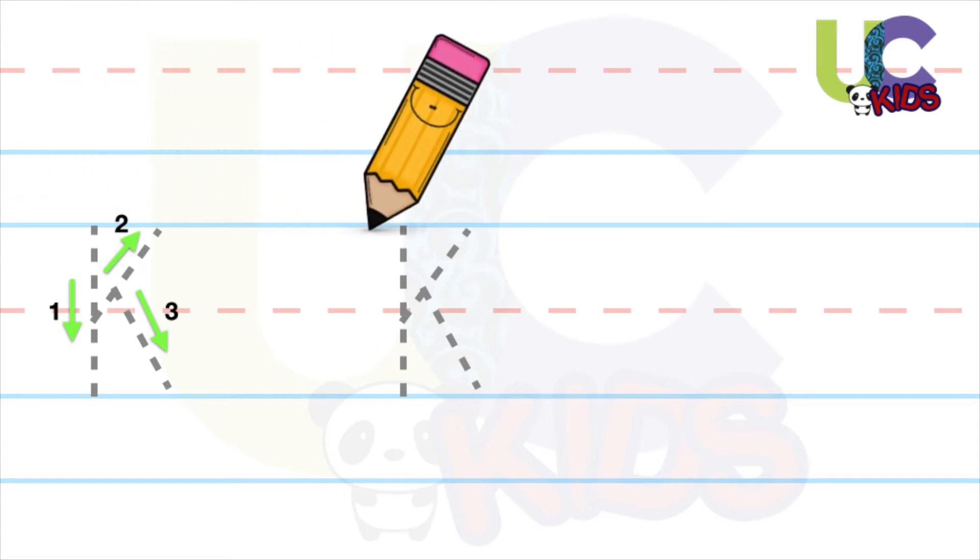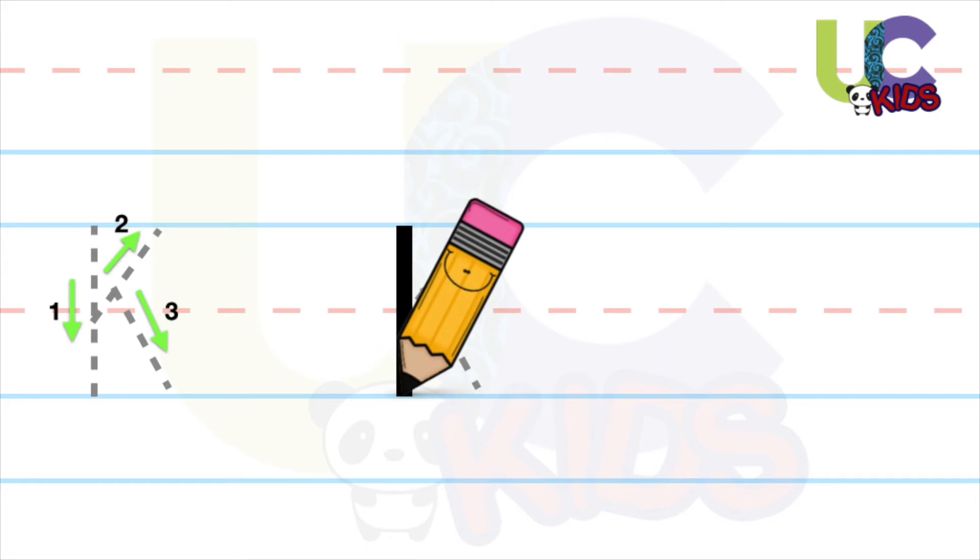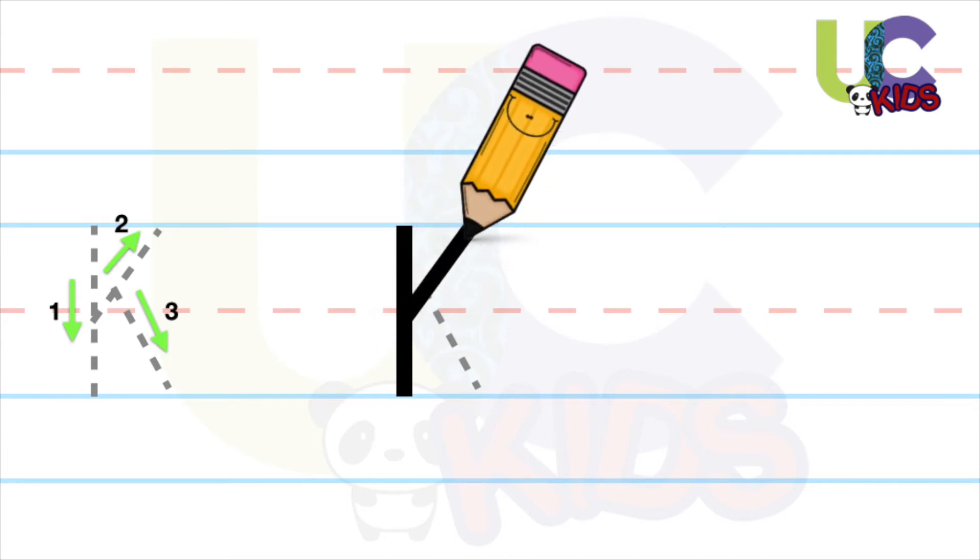Now get your pencil and start writing. First draw a standing line. Then go to the middle and draw a right slanting line upward. At the end, from the same point, draw a right slanting line downward.